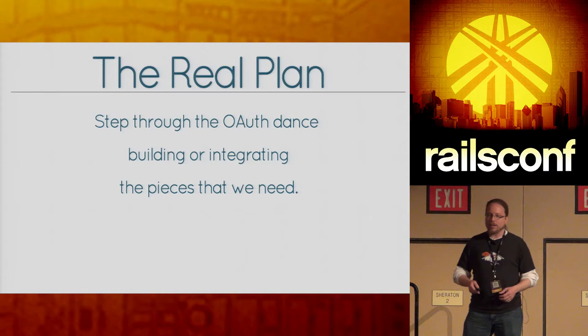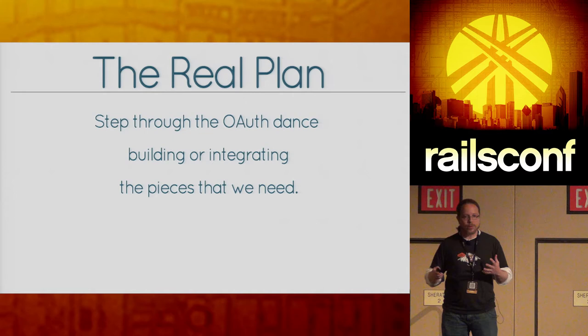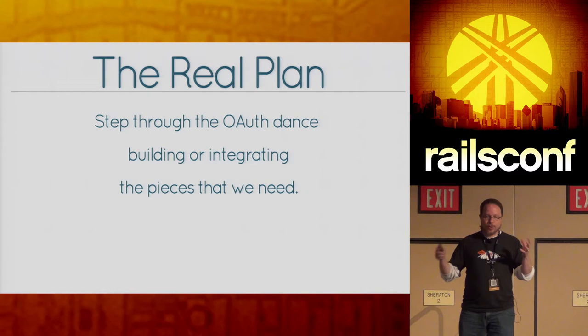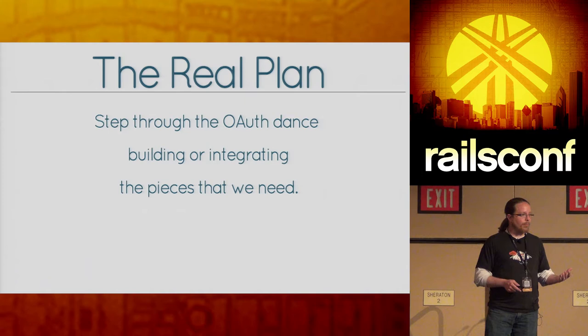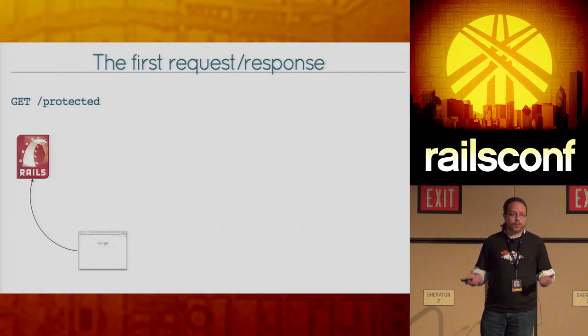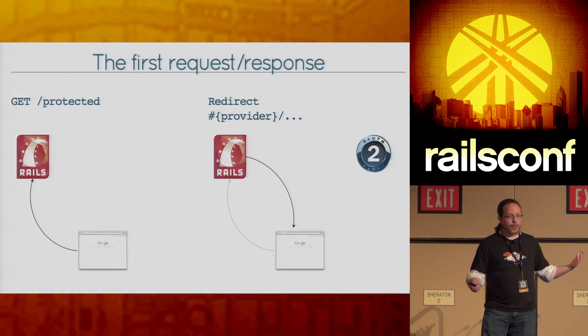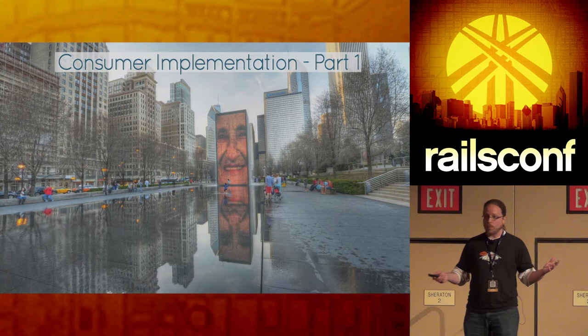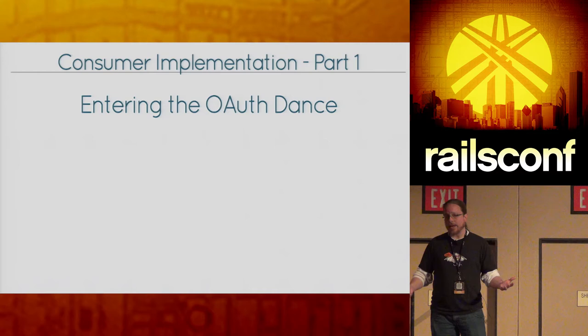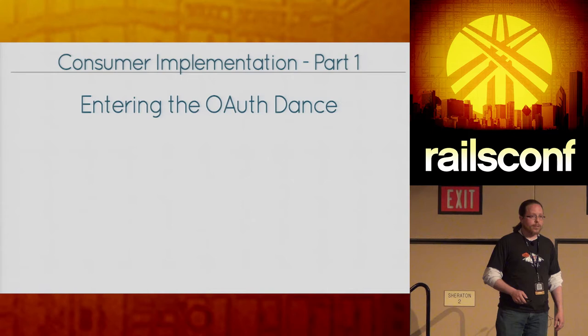Instead of doing this all as a provider and then all as a consumer — which makes it hard to follow what code is responsible for what parts of the request sequence — we're going to step through the sequence and implement the parts we need as we need them. The first thing we look at is the first request cycle: the client tries to get some protected stuff and needs to be redirected to the provider. So we're going to start with the consumer implementation — part one — which is all about entering the OAuth dance.